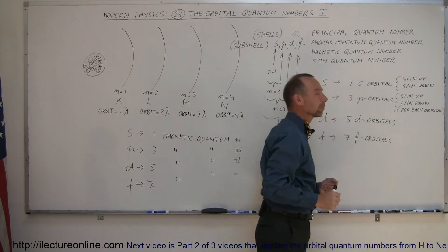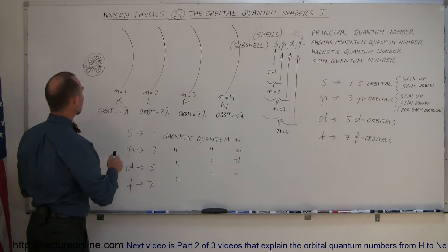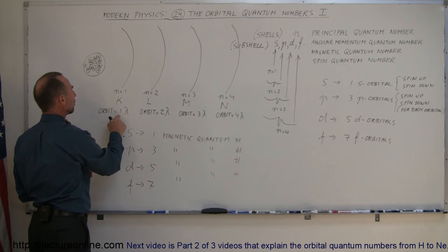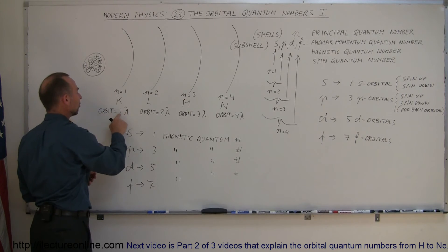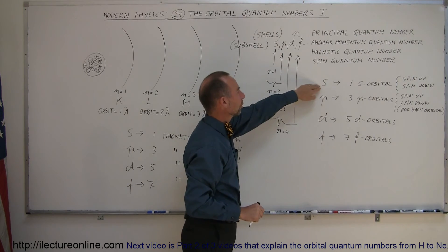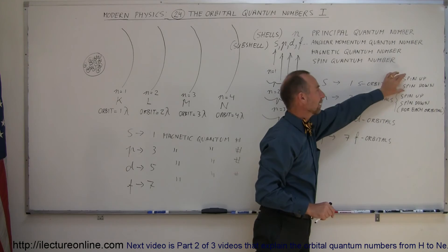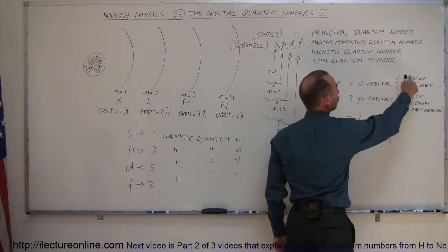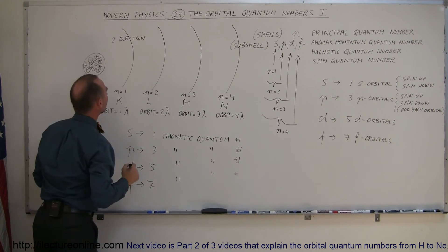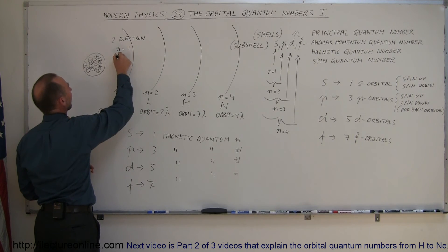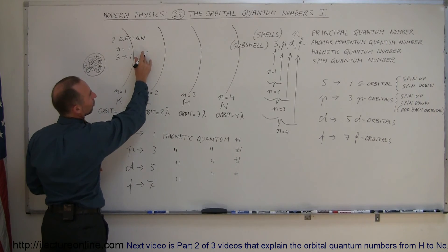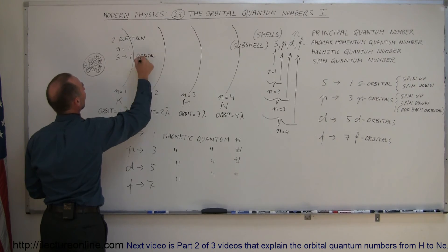How many electrons can therefore exist within each shell? In the N equals 1 shell, the K-shell, there's only one way the electron goes around the orbit, so the orbit equals one wavelength. Because of that, there is one subshell. Since there's only one S orbital, you can have a spin up or spin down — a total of two electrons in the innermost orbit. So in the N equals 1 level, there is one S orbital, and in that one orbital you can have two electrons.